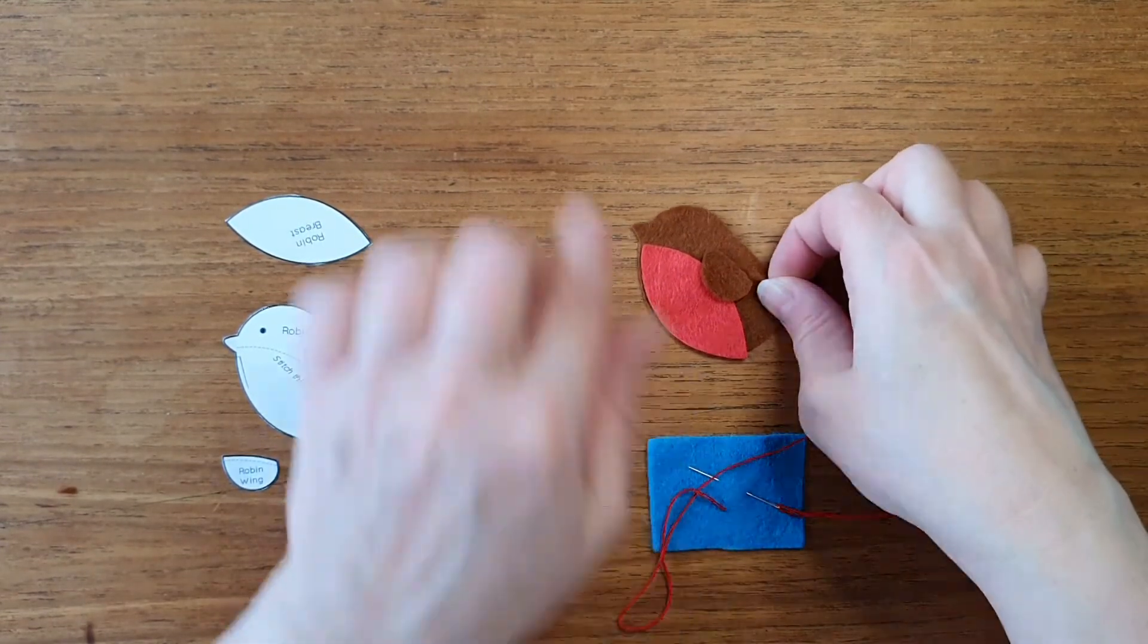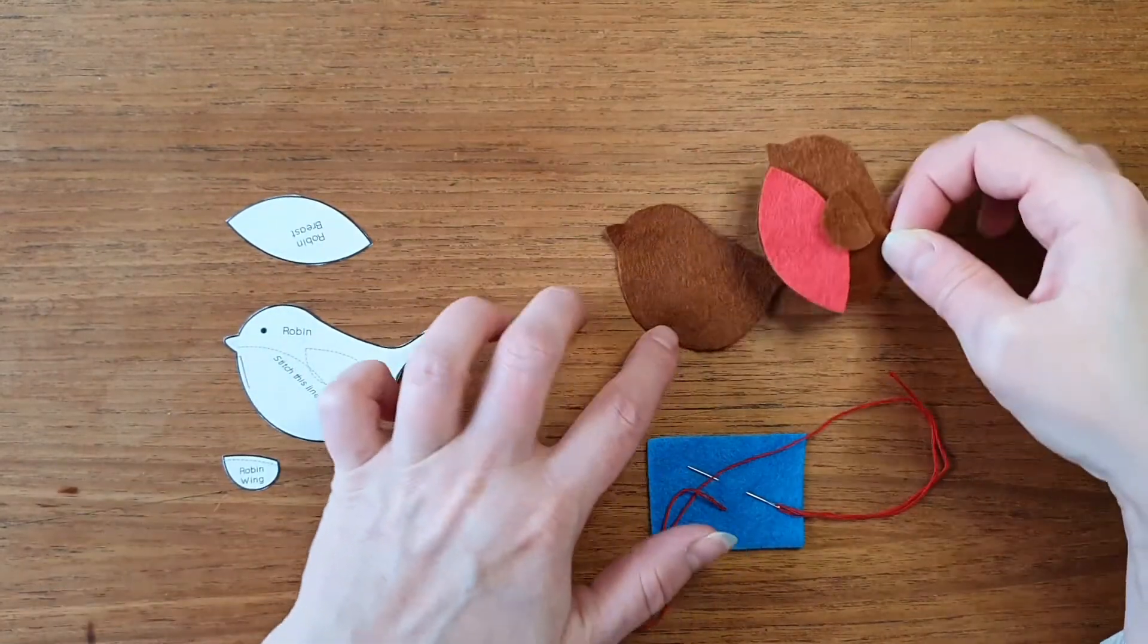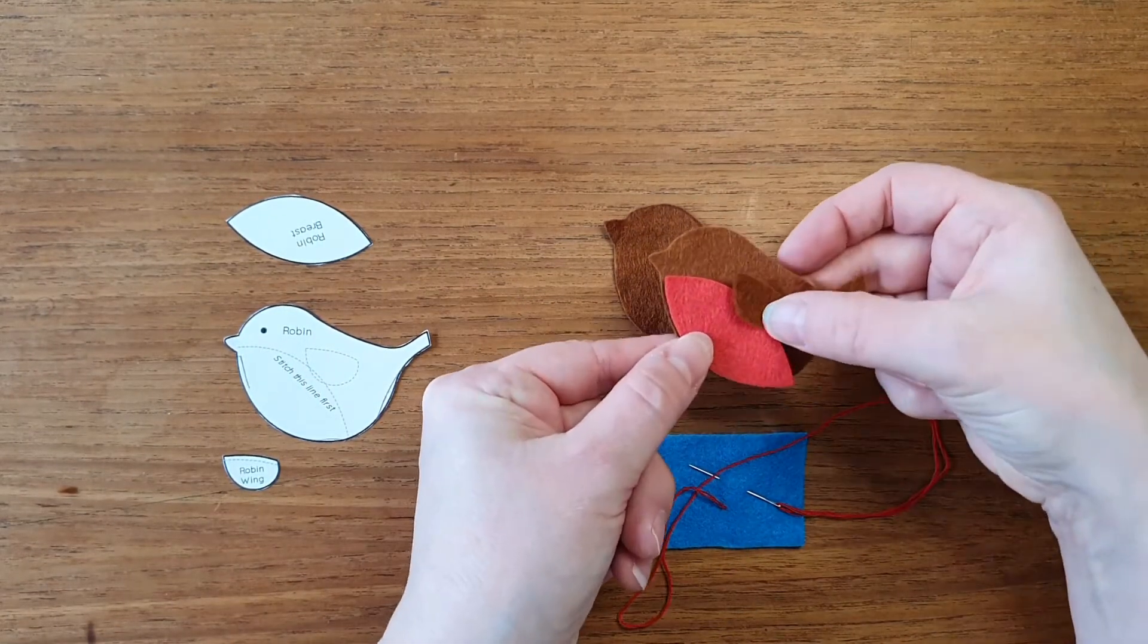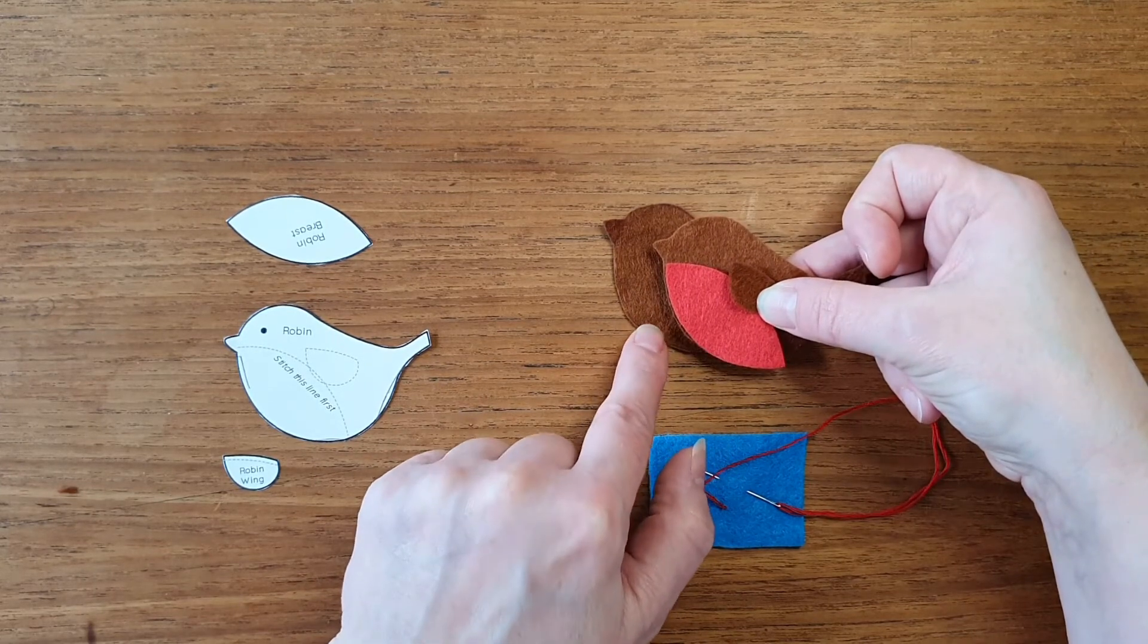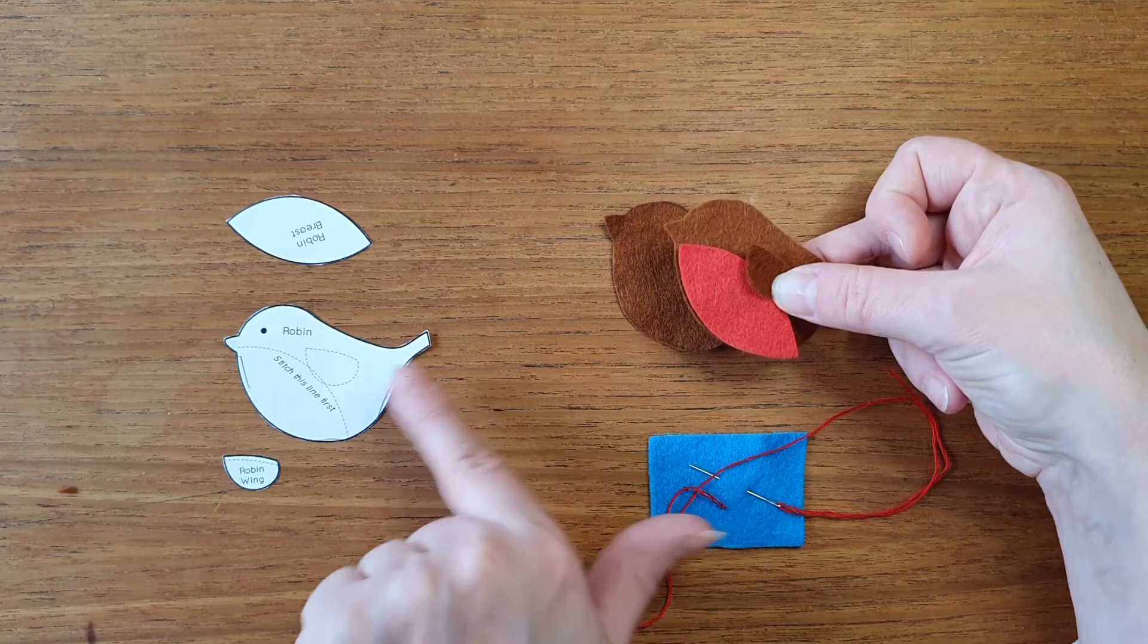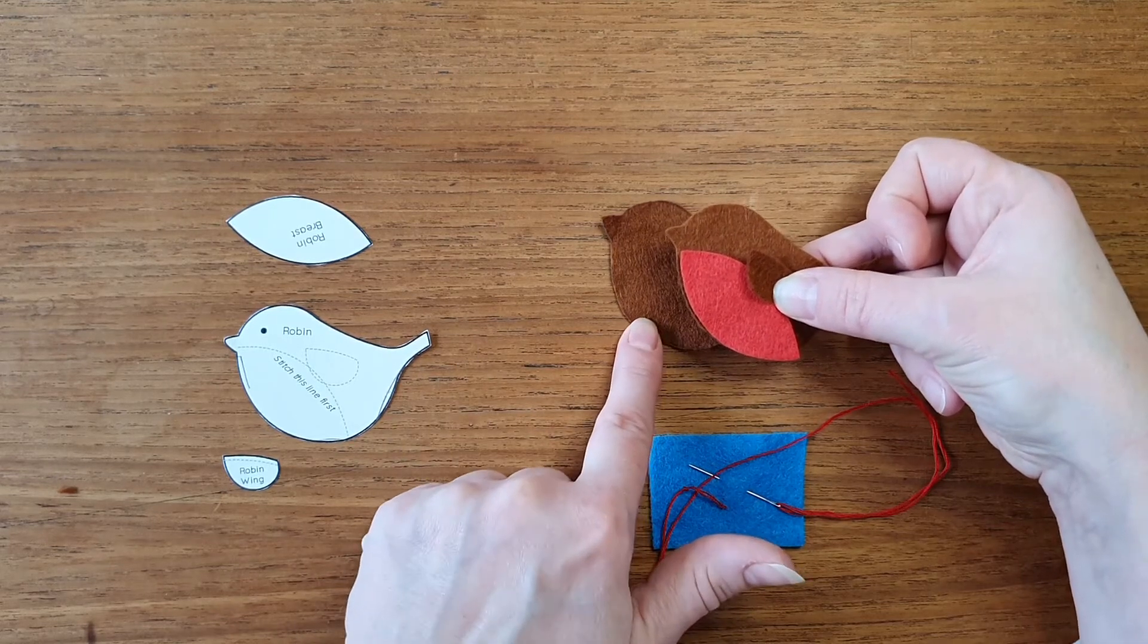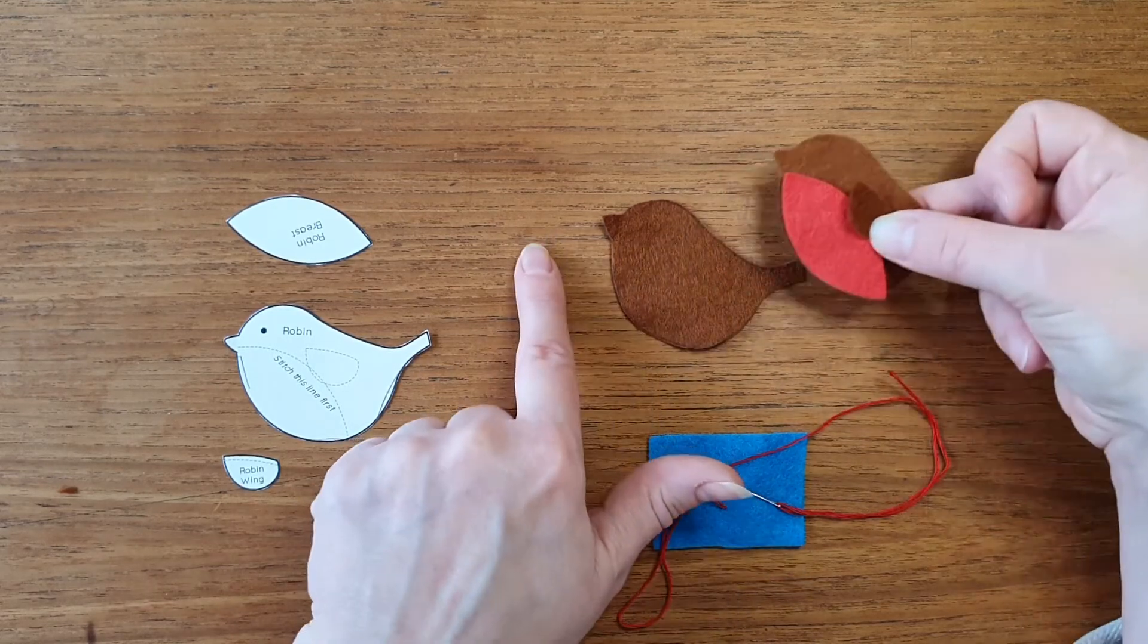Once these parts are all on, I can layer up my front and the back. In tip one, we talked about flipping the template over to draw your second piece, and the reason for that...